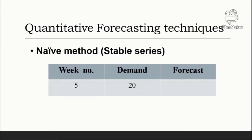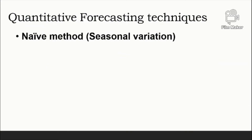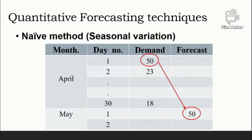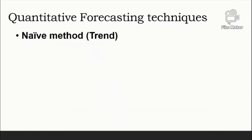If demand for a product last week was 20 cases, the forecast for this week is 20 cases. With seasonal variations, the forecast for this season equals the value of the series last season. For example, the forecast for the number of checks cashed at a bank on the first day of the month next month equals the number cashed on the first day of this month.